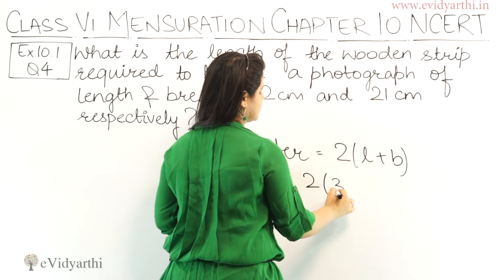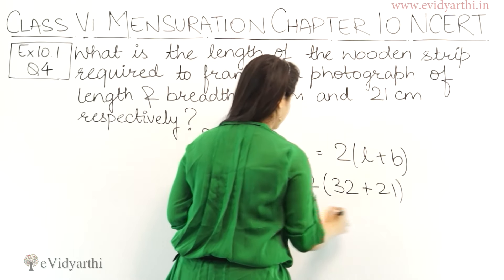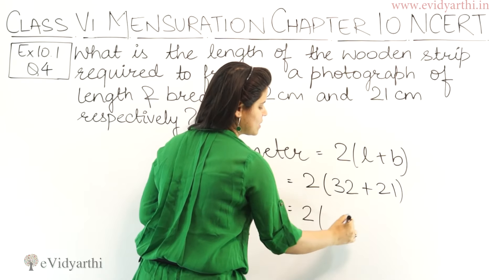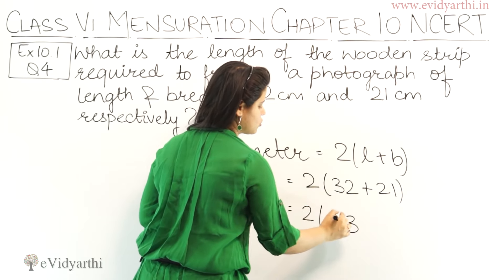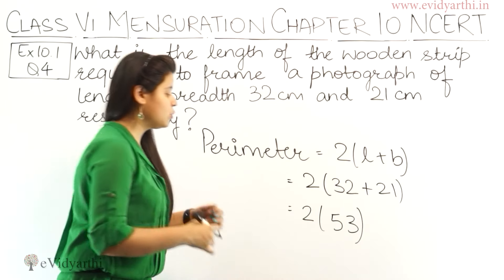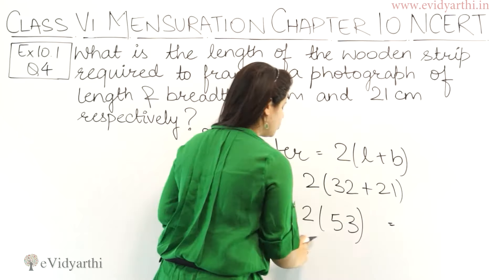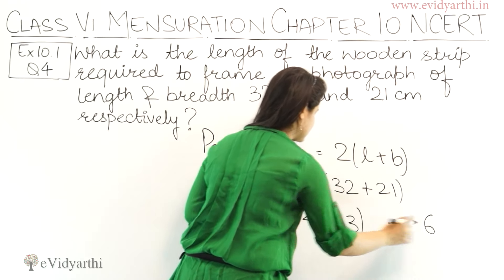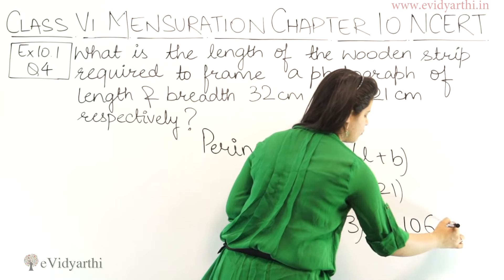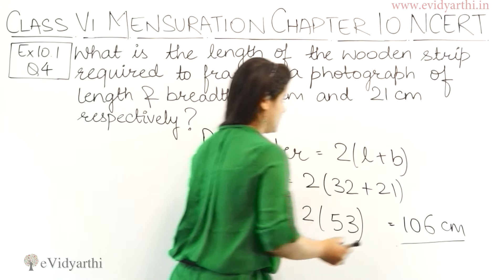So this is 2(L + B), where L is 32 and B is 21. So 32 plus 21 is 53. We have 2 into 53. Let's multiply this: 2 into 3 is 6, 2 into 5 is 10. So we have 106 cm.